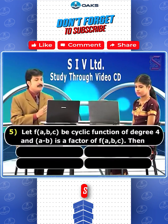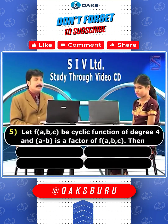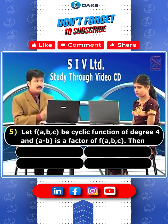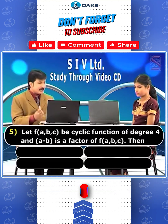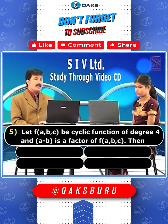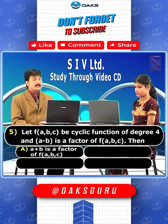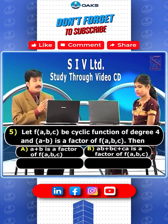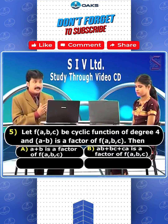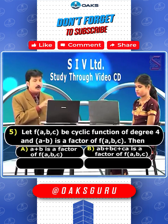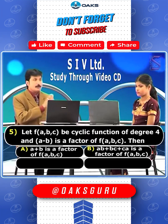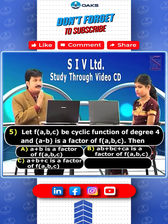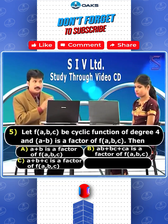Let f(a,b,c) be a cyclic function of degree 4, and (a-b) is a factor of f(a,b,c). Then which of the following is also a factor? Option A: (a+b). Option B: (ab+bc+ca). Option C: (a+b+c). Option D: none.